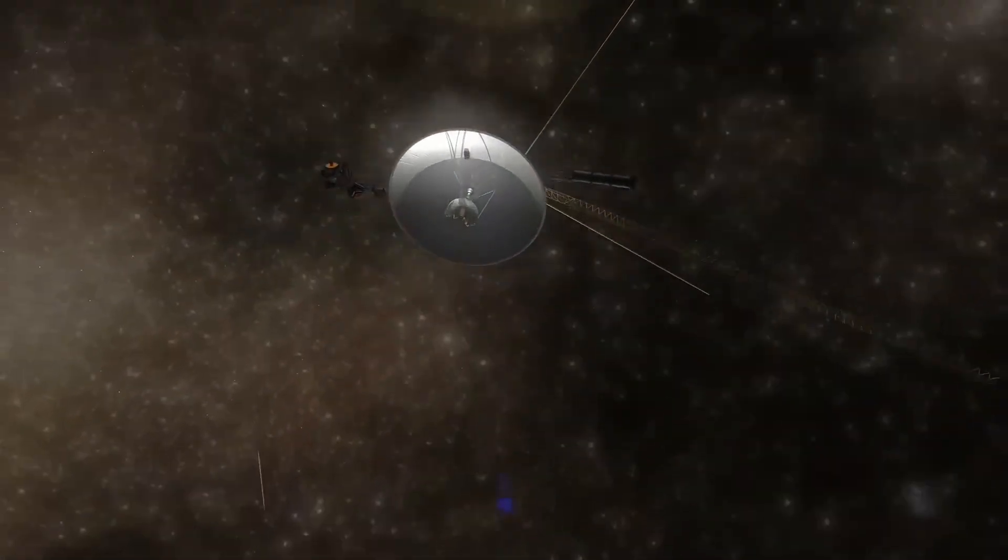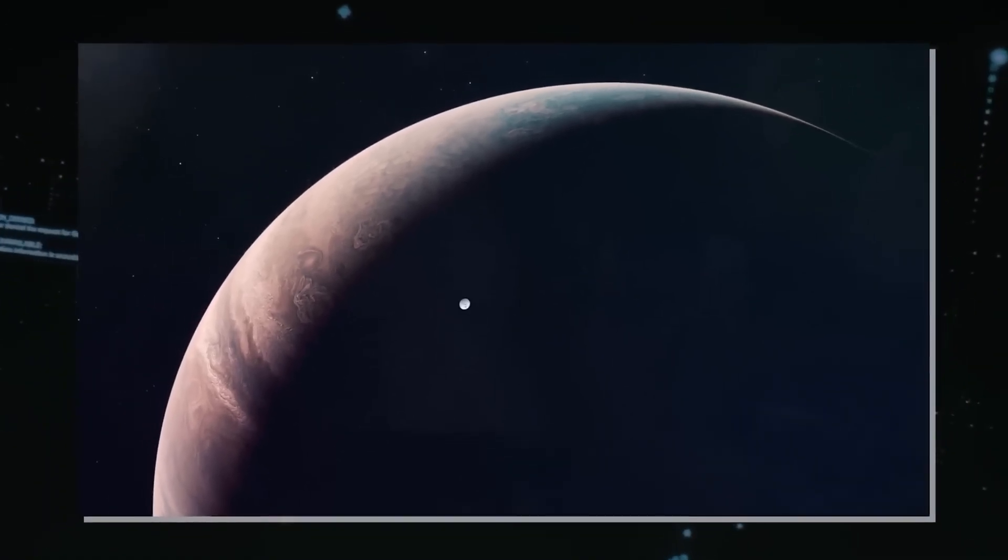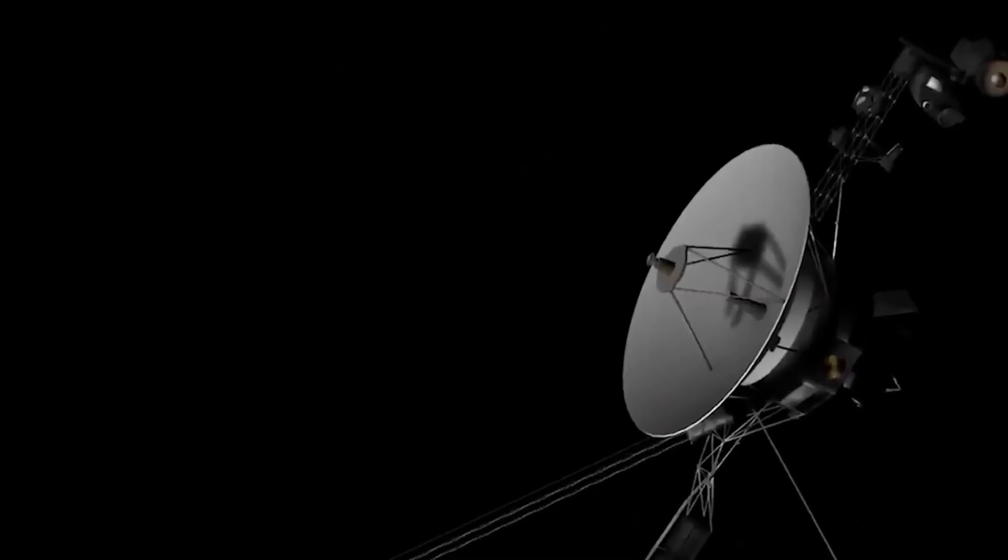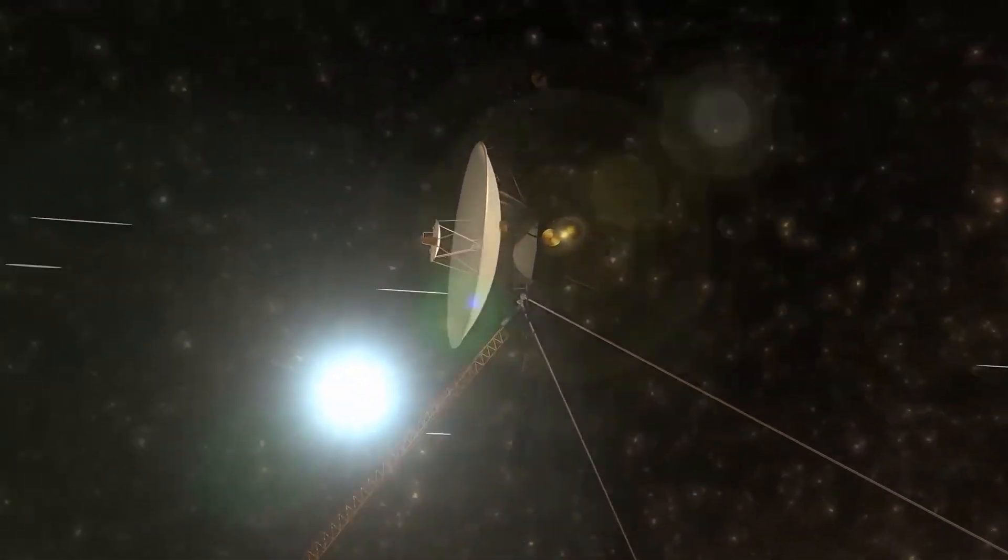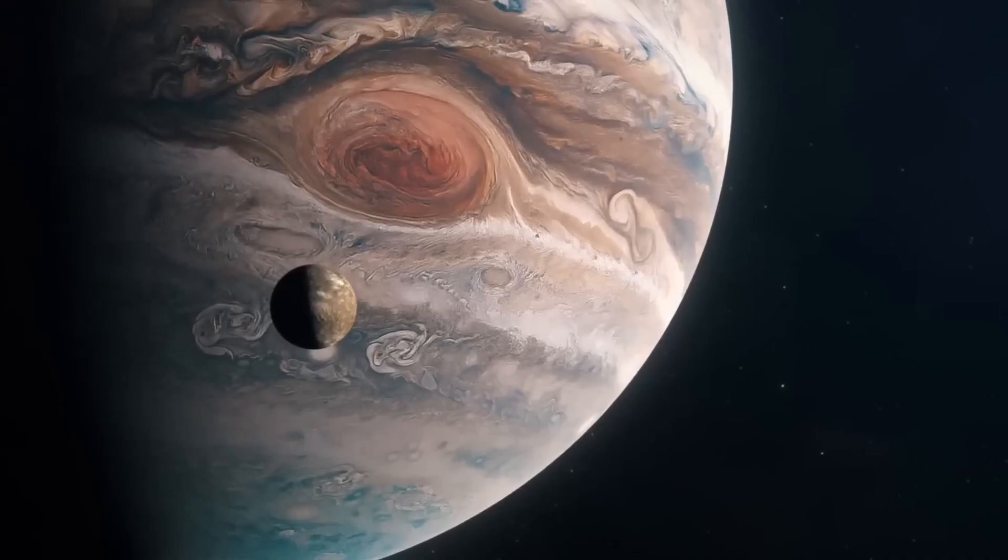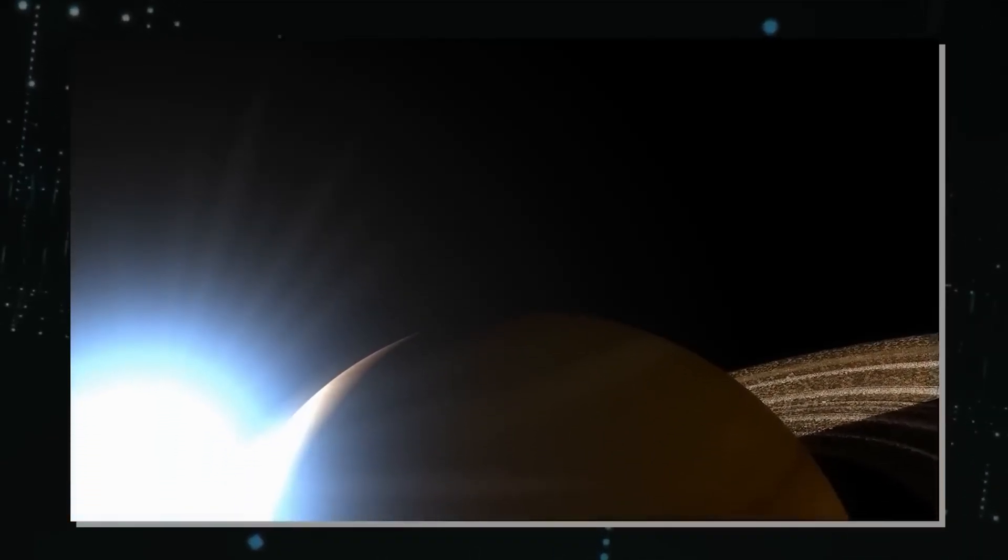Europa, one of Jupiter's largest moons, has intrigued scientists for some time because of evidence of a subsurface ocean beneath its frozen crust. Features such as cracks and ridges suggest that gravitational forces from Jupiter and nearby moons could be causing tectonic activity beneath Europa's ice. The possibility of an ocean excites scientists because where there's liquid water, there could be life. If Europa's ocean contains hydrothermal vents similar to those on Earth, it could create conditions suitable for tiny life forms.